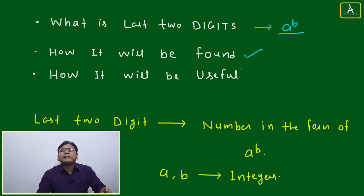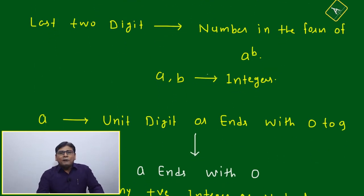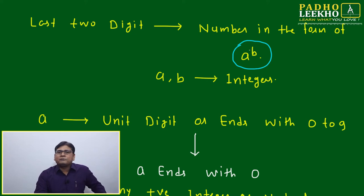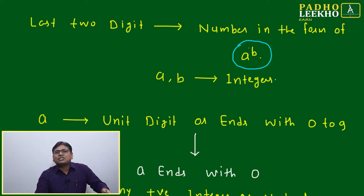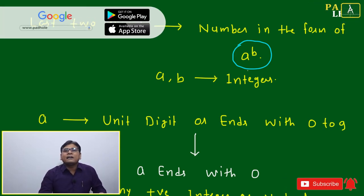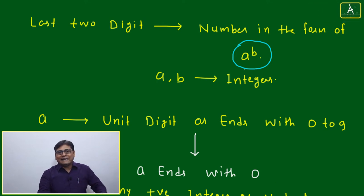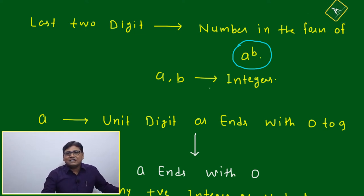This session will discuss how to find the last two digits and their application if the number ends with 0. Numbers should be in the form of A to the power B — in exponential form. Only in that case is it meaningful to find the last digit, last two digits, or last three digits. For last three digits, there is no clear shortcut — you must follow the algebraic binomial expansion pattern. But for last two digits, a shortcut technique exists.